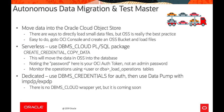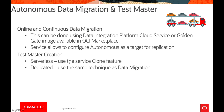For online and continuous data migration, GoldenGate is available in the Marketplace, or you can use the Data Integration Platform Cloud Service, which allows you to configure Autonomous Database as a target for replication. You can also use test/master clone use cases on Serverless using the service clone features. In Dedicated, you can use the same techniques as data migration for clone creation.